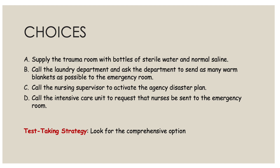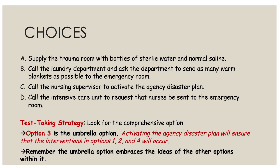The test-taking strategy here is to look for the comprehensive option. In reviewing choices A, B, C, and D, option C is the umbrella option because activating the agency disaster plan will ensure that the interventions in options A — supplying the trauma room with sterile water and normal saline — option B — calling the laundry department for warm blankets — and option D — calling the ICU to send nurses — are all activated. All of those things will be set in motion if you choose option C: calling the nursing supervisor to activate the agency disaster plan.